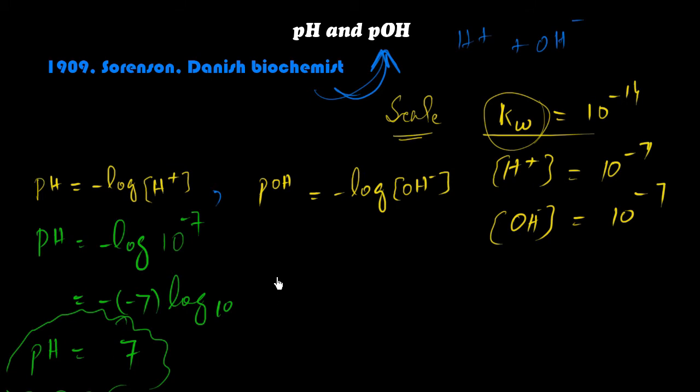In the same way, when we calculate the pOH, then it comes 7. It means that the pH plus pOH is equal to 7 plus 7. It means that it will become 14.